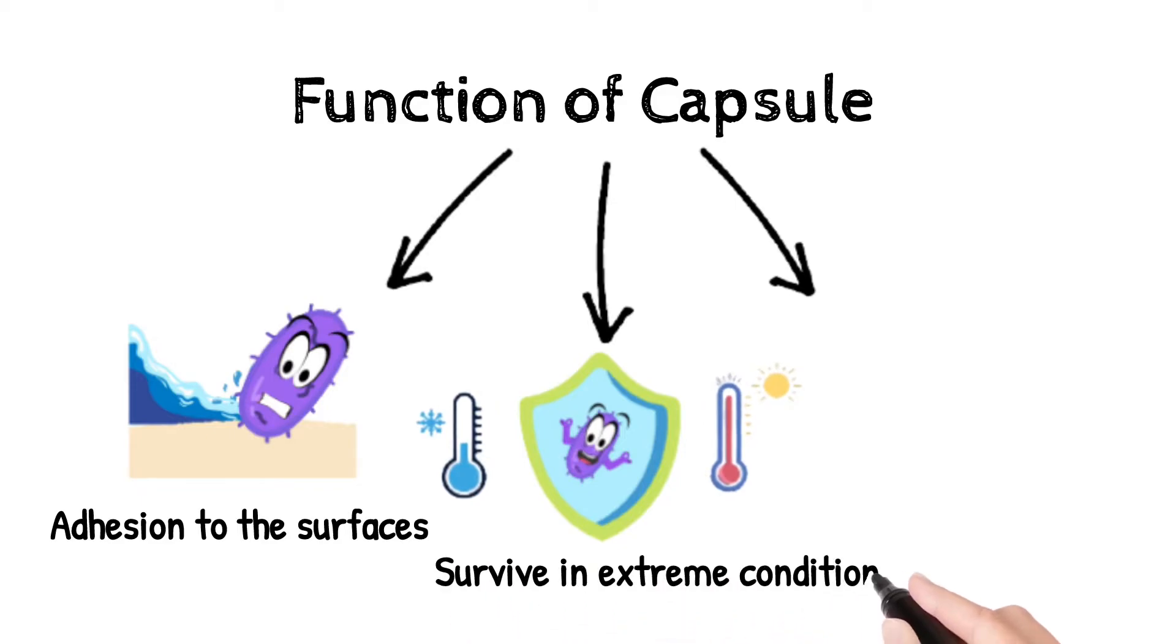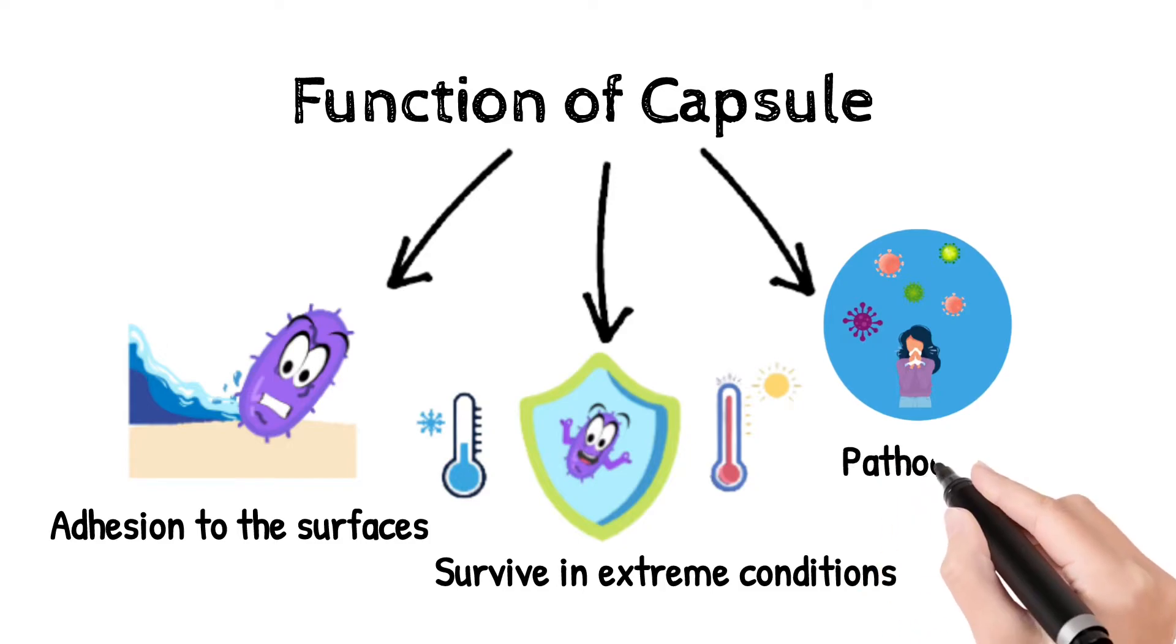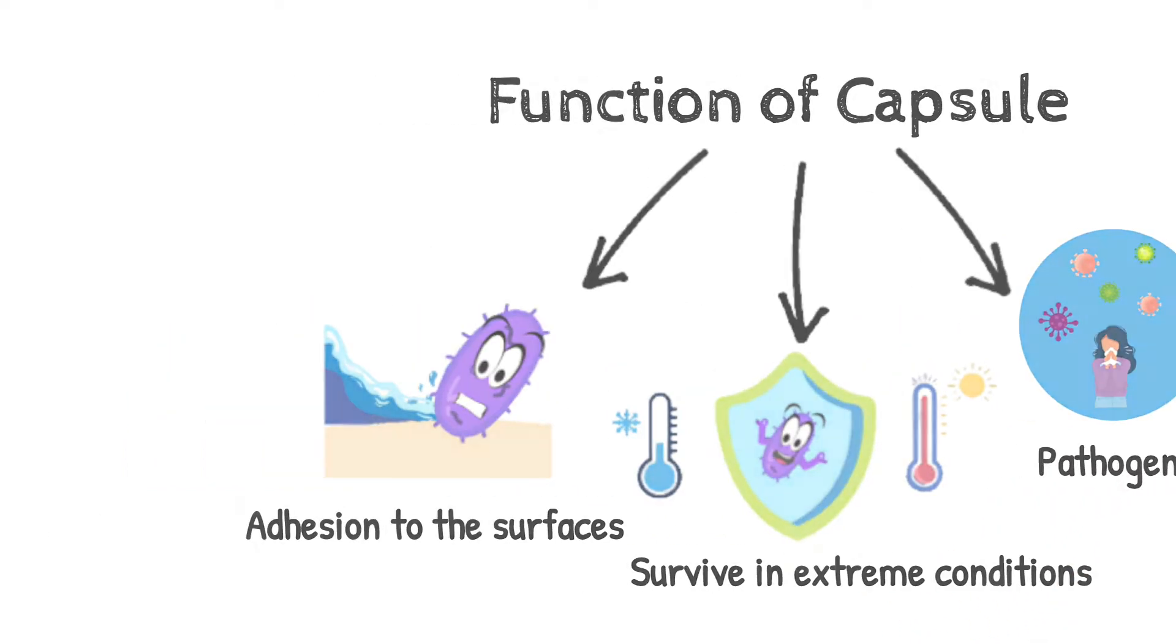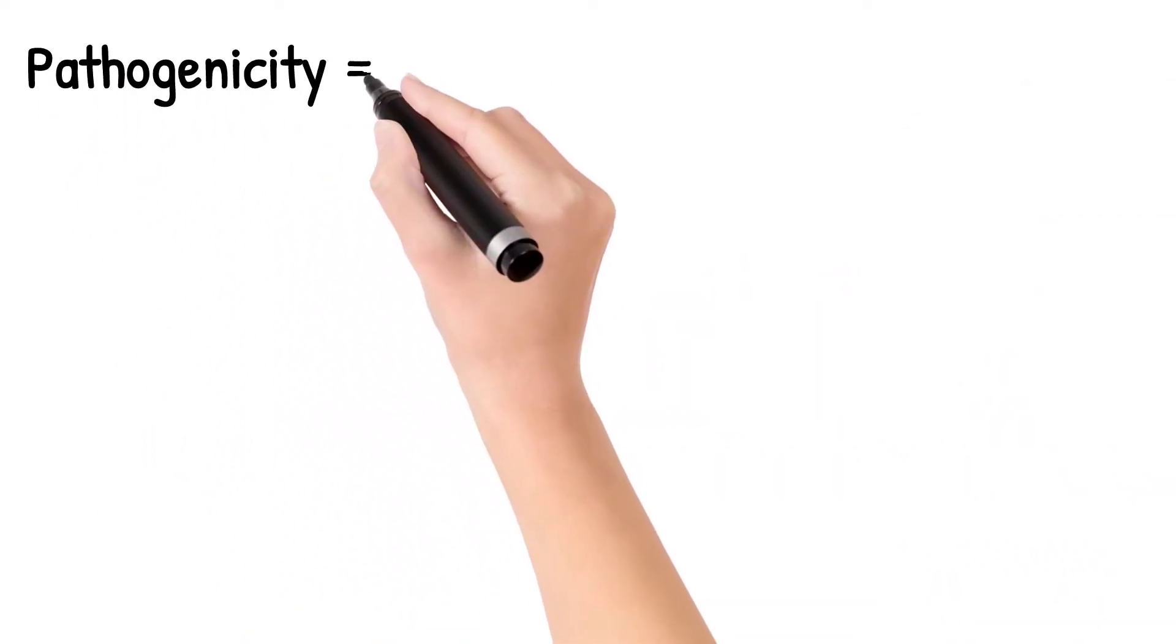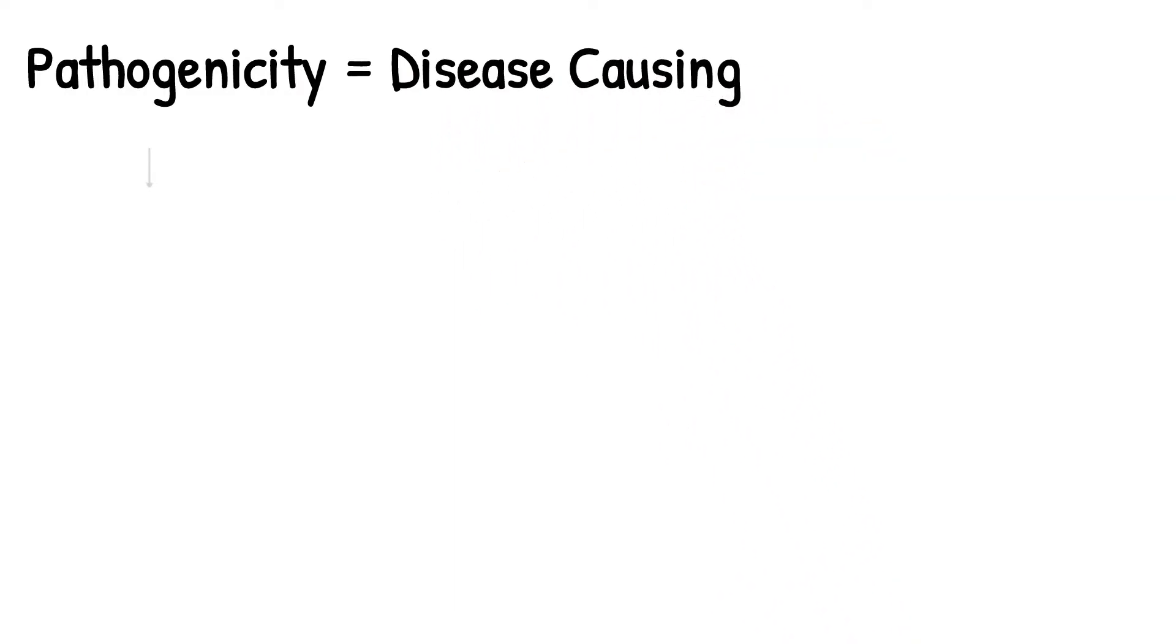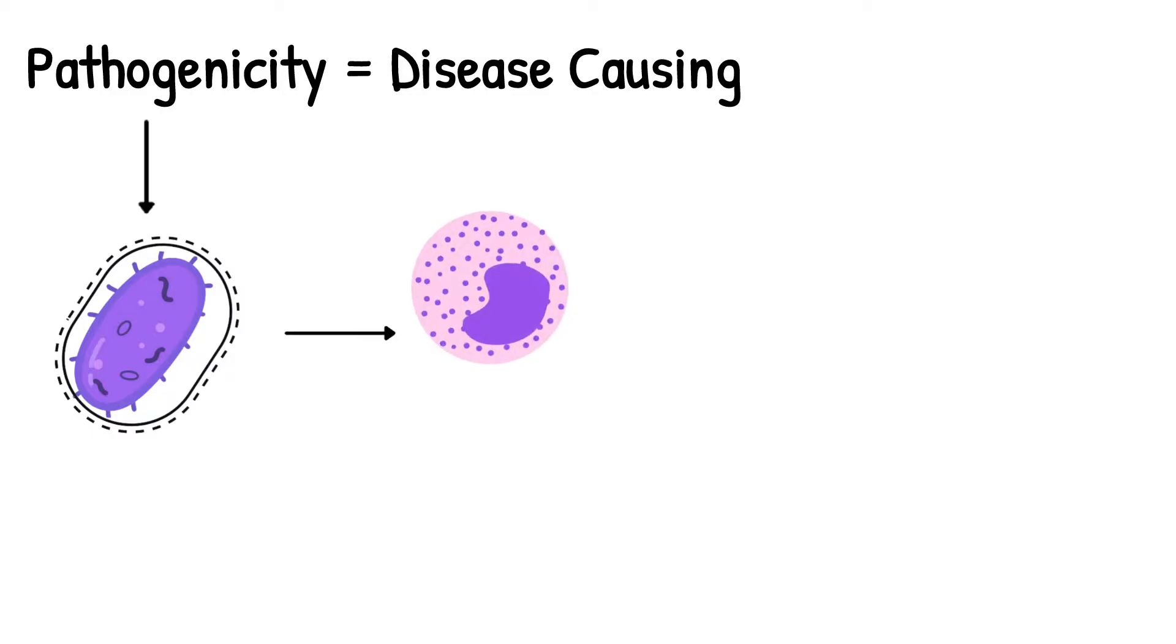It helps bacteria survive in extreme conditions. Third, capsule increases pathogenicity. Pathogenicity refers to the ability of an organism to cause disease. Bacteria with capsules prevent neutrophils and macrophages from engulfing them - in basic terms, they prevent phagocytosis.